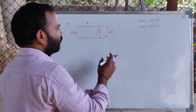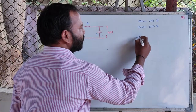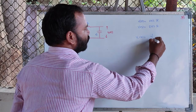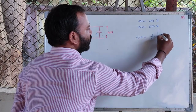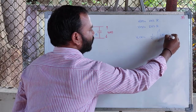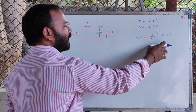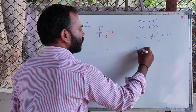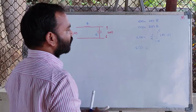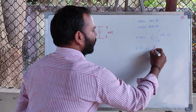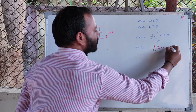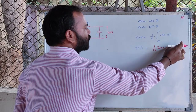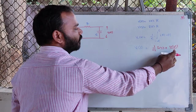Secondly, if we consider the voltage across the capacitance, Vc(t) = (1/C) × integral from minus infinity to t of I(t) dt. If I apply the Laplace transform for this, then it will be Vc(s) = (1/Cs) × I(s) plus the initial voltage across the capacitor divided by the variable s.